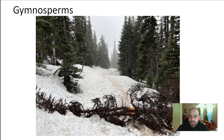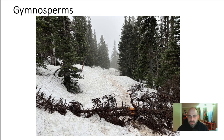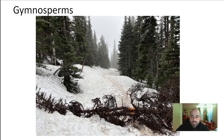Next are gymnosperms. These are like conifers — evergreen trees, cedars, spruces, that kind of thing. You can see those trees in the picture. These are seed-bearing vascular plants. They have seeds and vascular systems, but they don't have flowers. Their reproductive organs are on structures called cones. They also have shallow root systems, which is why you sometimes see them fall over.